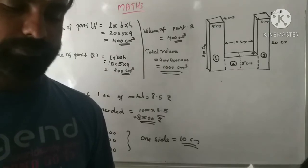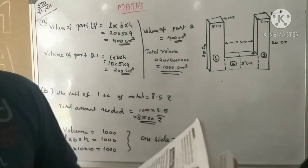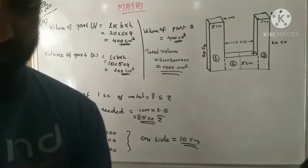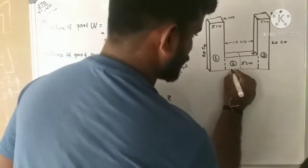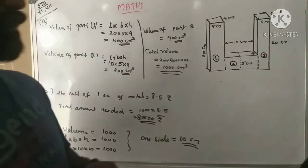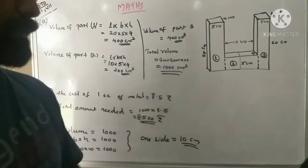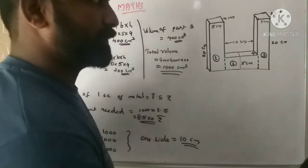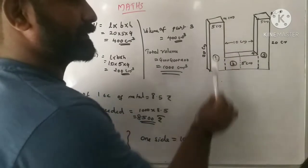The metal block is shown here. It has three parts. Here we have the measurements — the height and width ratios on the right side and on the left side.